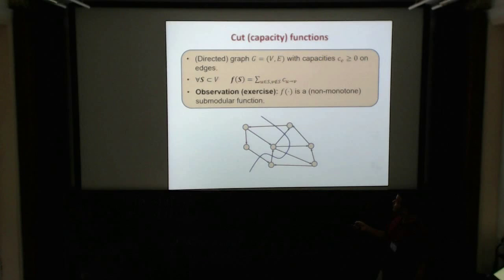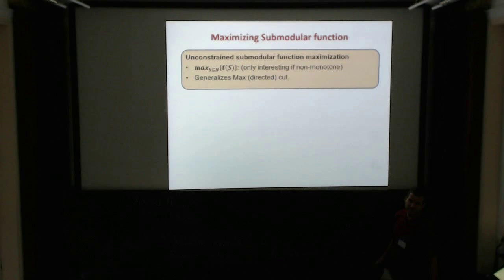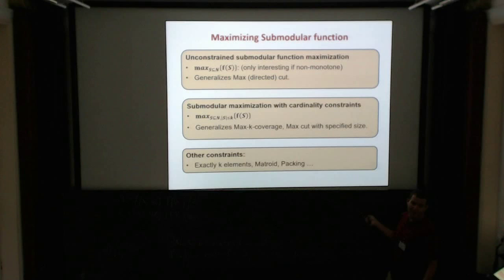We are going to speak mostly on two, maybe the simplest, submodular maximization problems. One is the unconstrained: you want to find the maximum subset that maximizes f(S). This is only interesting in the non-monotone case. And not the matroid case, but just the cardinality constraint: you want to find a subset of size at most k. You can think about max-k-coverage or max cut with specified size.